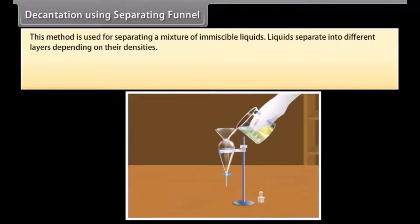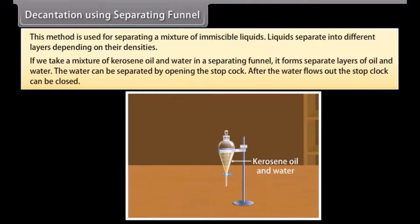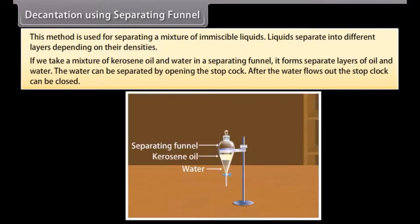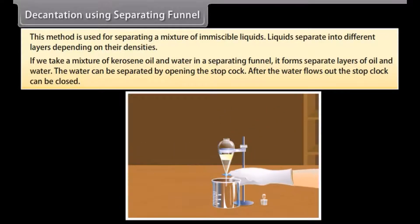Decantation using a separating funnel. This method is used for separating a mixture of immiscible liquids. Liquids separate into different layers depending on their densities. For example, if we take a mixture of kerosene oil and water in a separating funnel, it forms separate layers of oil and water. The water can be separated by opening the stopcock, and after the water flows out the stopcock can be closed.